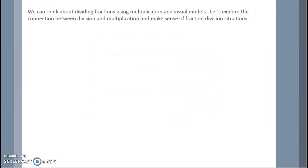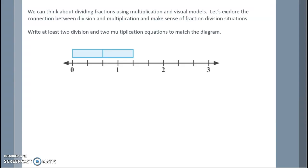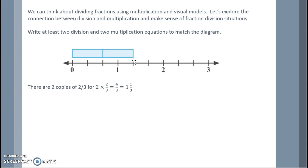We can think about dividing fractions using multiplication and visual models. Let's explore the connection between division and multiplication and make sense of fraction division situations. Write at least two different division and two multiplication equations to match the diagram. There are two copies of two thirds. When I look from 0 to 1, I see that they are broken into thirds — this first part is two thirds and this second part is two thirds. Two copies of two thirds means we multiply two times two thirds, which is four thirds, or one and one third.